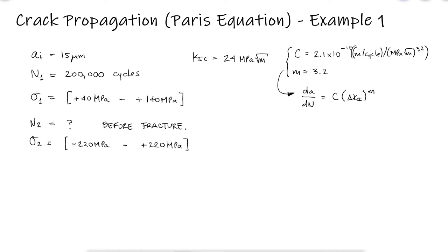We are being asked how many cycles can the part withstand before it fractures? This will happen when the length of the crack reaches a critical length, or in other words, when the length of the crack causes a stress intensity factor Ki that exceeds the fracture toughness of the material.